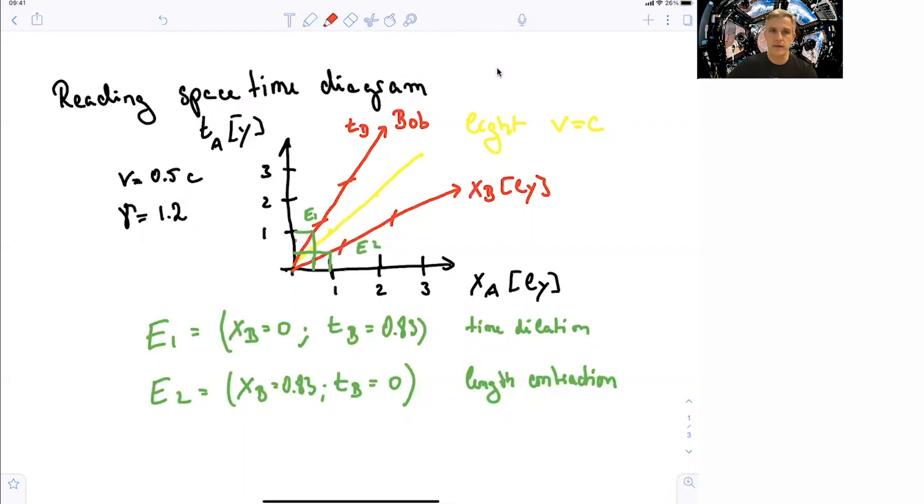So let's start again with Alice's space-time diagram here, in which we plot or draw Bob's space-time diagram. The relative velocity difference is 0.5 times the speed of light, and that leads to a gamma factor of 1.2. We also plotted the worldline of light in here, in yellow. Light is the speed of light equal to c.